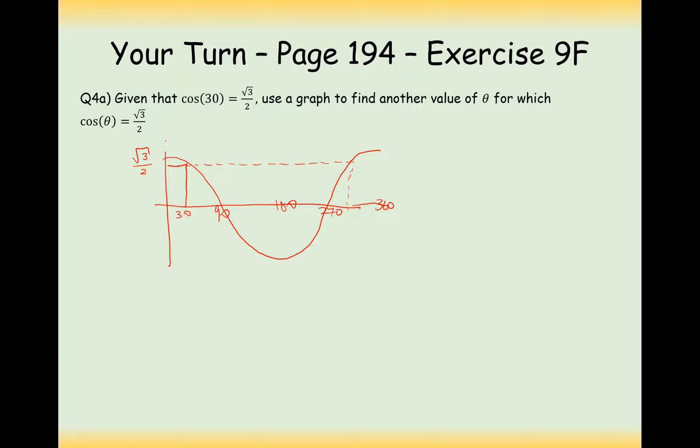Now, if we know that the distance from the peak here to our intersection here is 30 degrees, then that's going to have to mean that if we go backwards here by 30 degrees, we're going to get to this point here where it's also root 3 over 2. So doing 360 take away 30 degrees, and we're going to get 330 degrees as the answer to this question.